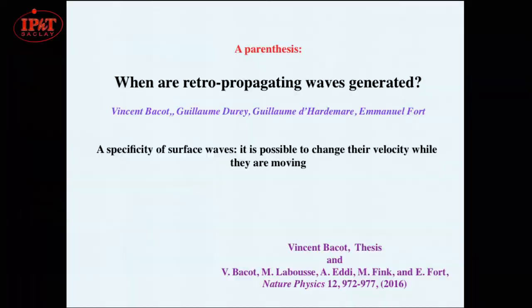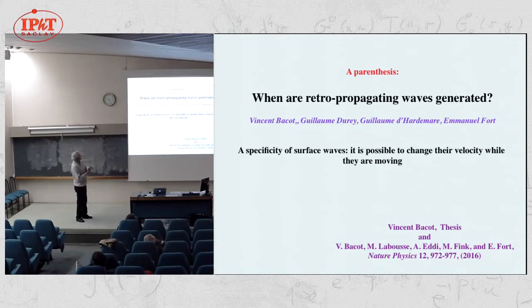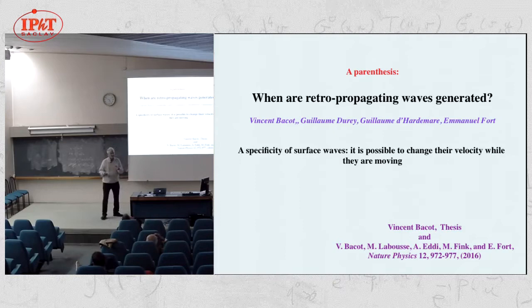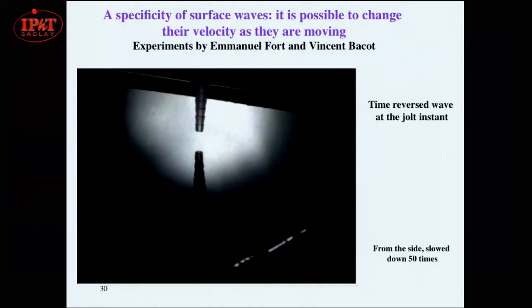This small experiment with a steel ball generated another experiment done by Emmanuel Faure and his group. Surface waves have the specificity that you can see them propagate and they move quite slowly, so you can do things to them while they are propagating — in particular, you can change the index of propagation, the speed of propagation, as they are moving. Emmanuel has done two very nice experiments which I will show.